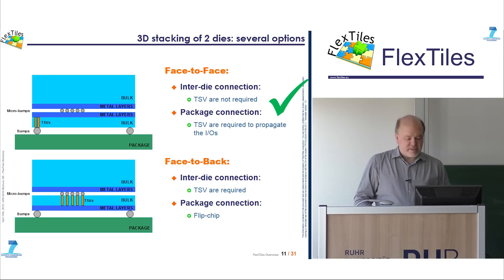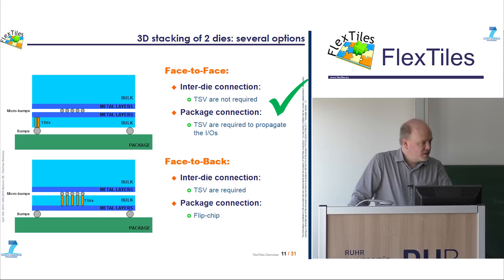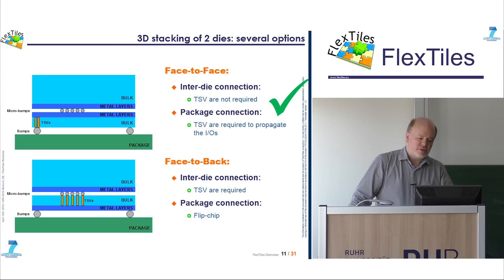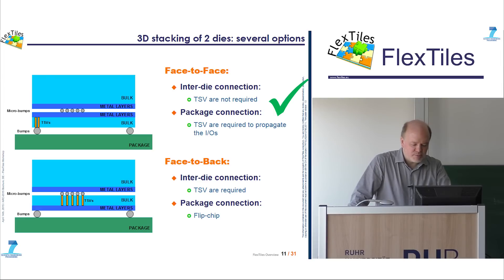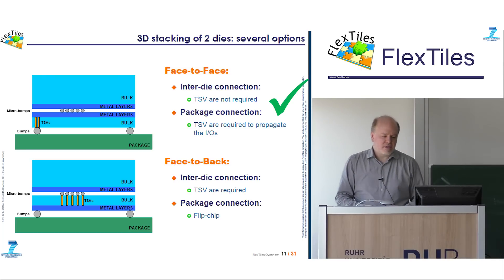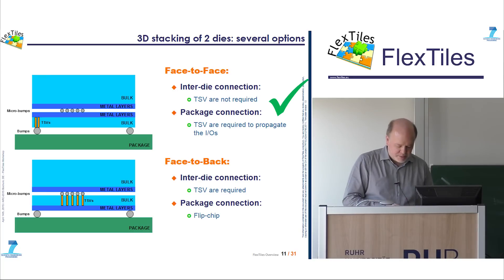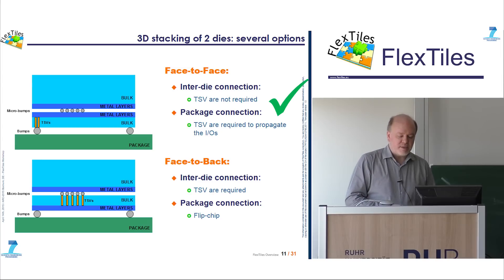One key investigation in the FlexTiles project was how to best optimize the 3D stacking strategy. There are different ways to stack two dies depending on how we flip each die. We calculated with the sizes of different blocks to be integrated, the sizes of pads for bumps and micro-bumps between dies, and the sizes of TSVs to go through the die thickness for wiring. The face-to-face configuration turned out to be the optimal solution, and that's the one we adopted for FlexTiles.